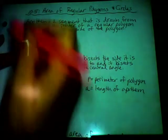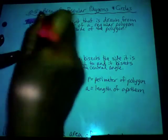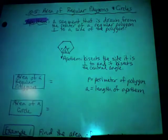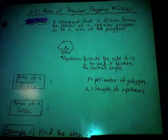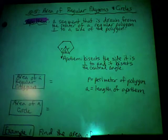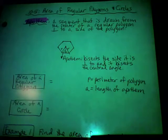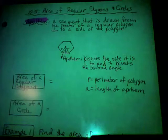Know what the word apothem means, because if you're asked to find it, you need to know what it is. The apothem is a segment drawn from the center of a regular polygon — assuming that polygon is inscribed inside a circle — perpendicular to a side of the polygon.